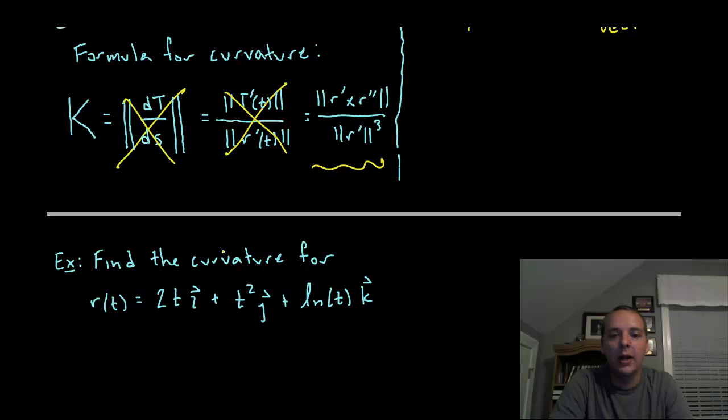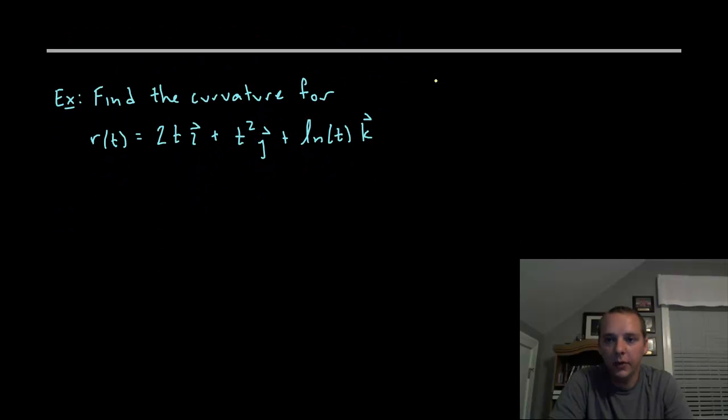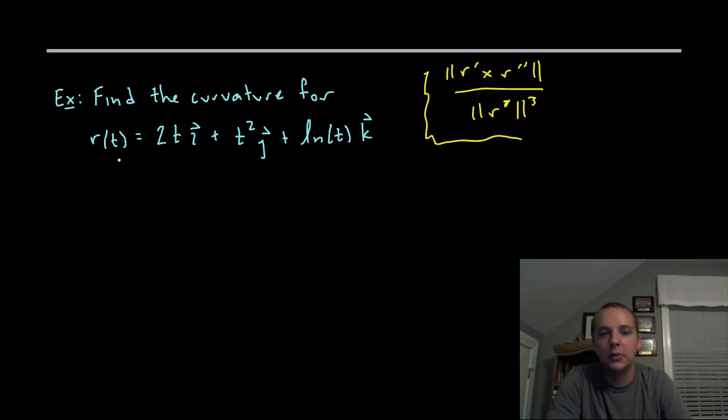I've got r, I can quickly find r prime and r double prime, and take cross products and norms. I see some stuff will start going away as I start taking derivatives. I think I'm going to go with the third approach. Norm r prime cross r double prime divided by norm r prime cubed. Let me just find all the pieces to the puzzle and then we'll put them all together.